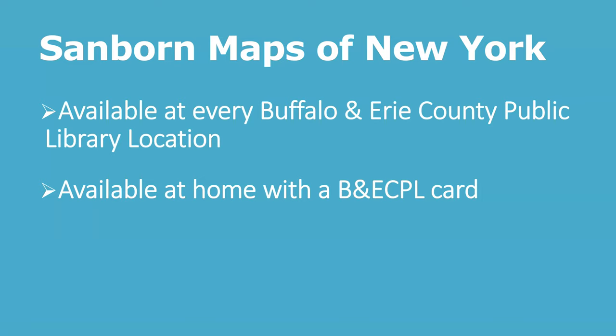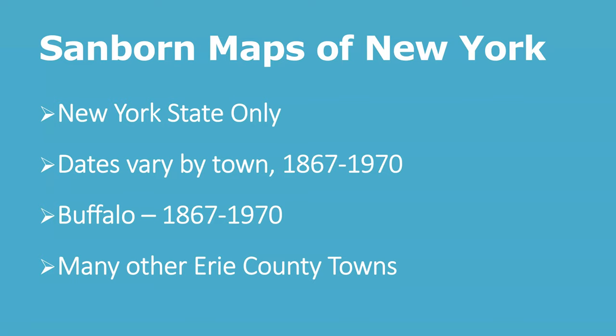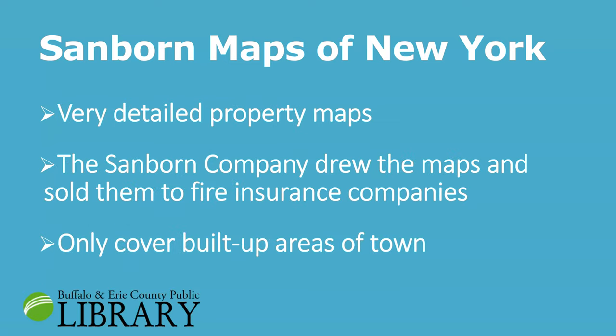Next, we'll tour Sanborn Maps of New York. This database is available at every Buffalo and Erie County Public Library location and from home with a library card. The maps are for New York State only. The dates vary by town, but in general the coverage is from 1867 up to 1970. Buffalo's maps cover from 1867 up to 1970, and many other Erie County towns are in this database. Sanborn Maps are very detailed property maps — the Sanborn Company drew them and sold them to fire insurance companies so they could decide their premiums. They only cover built-up areas of towns.